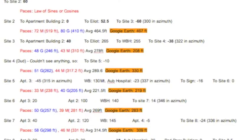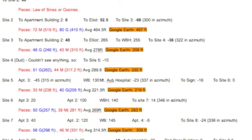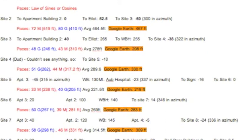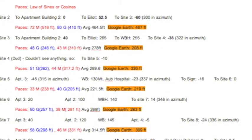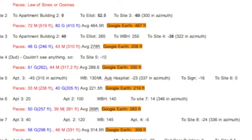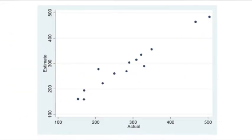For our statistical analysis, we calculated the differences between our pace length measurements and the actual distances between sighting locations from Google Earth. We then created a scatter plot of the estimates versus the actual measurements.